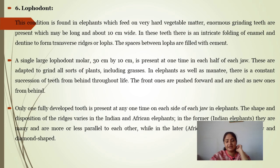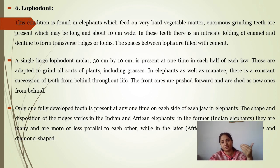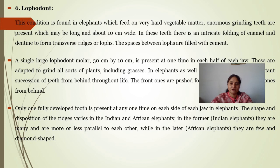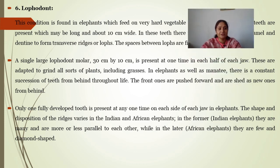In elephants as well as manatees, there is a constant succession of teeth from behind throughout life. This condition is a polyphyodont condition, where one fully developed tooth is present at one time on each side of each jaw.